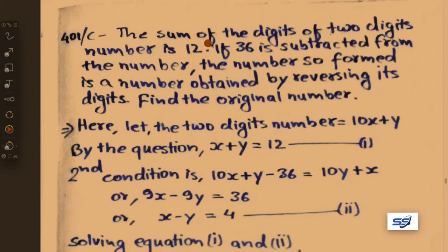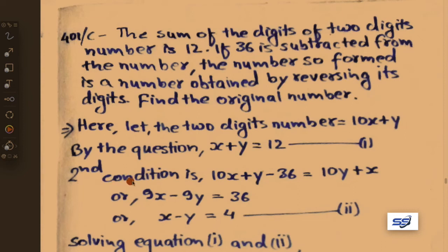From the first condition: the digit of our number is x and y, where x is in the tens place and y is in the units place. So x plus y equals 12. Let this be equation 1.